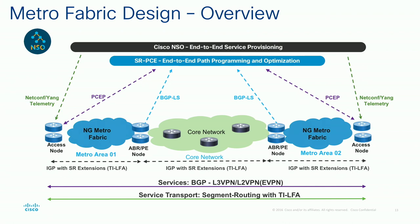SRPCE — the SR path computation element — is the element responsible for computing paths end-to-end across the network. In a traditional distributed control plane like LDP or RSVP-TE, you have a fully distributed control plane with no outside centralized control. In this design, the SRPCE is a critical part of how we build those end-to-end paths, especially with constraints.